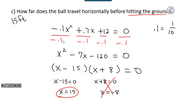If you didn't see to divide by negative 0.1 and then factor, you could have plugged the original coefficients — negative 0.1, positive 0.7, positive 12 — directly into the quadratic formula and dealt with the decimals. Or after clearing, plug in a equals 1, b equals negative 7, c equals negative 120 into the quadratic formula. Either way, you get the same two solutions of positive 15 and negative 8, and in context the answer is 15 feet.